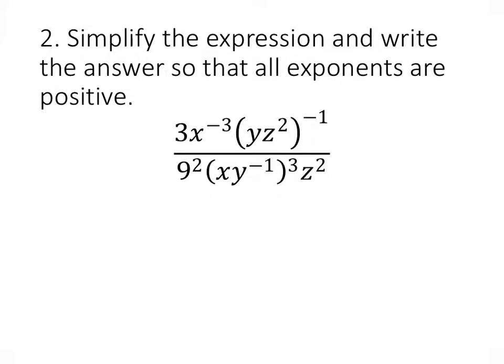Same idea here, obviously a little bit more complicated. We have three letters, x, y, and z, and we also have coefficients. We have a 3 on the top and 9 squared on the bottom. So we could think of 3 as 3 to the first, then we have 3 to the first on top, and 9 is 3 squared, so that's 3 squared squared on the bottom.